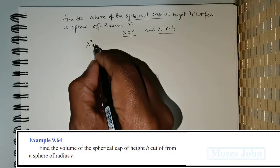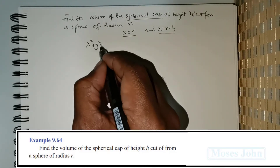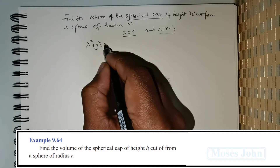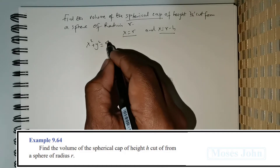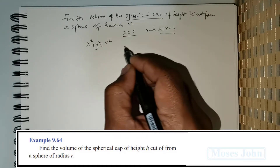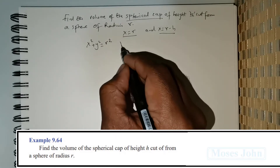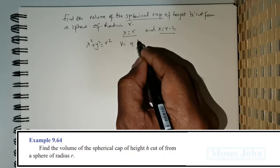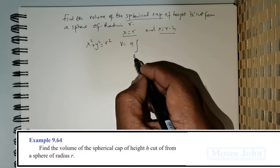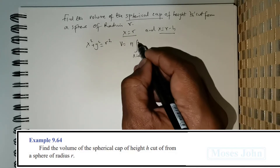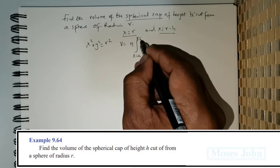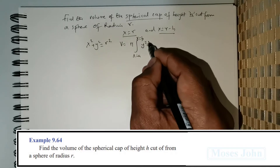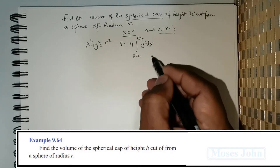The equation we will be using is x² + y² = r². The required formula is π times the integral between the limits x = a to x = b of y² dx.